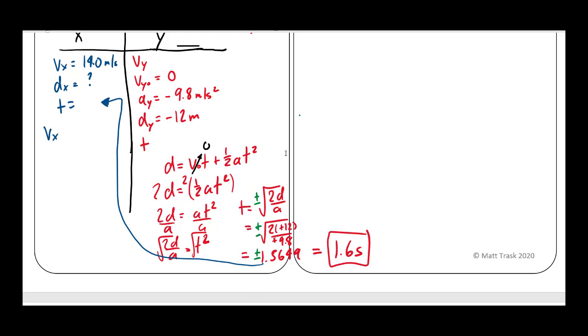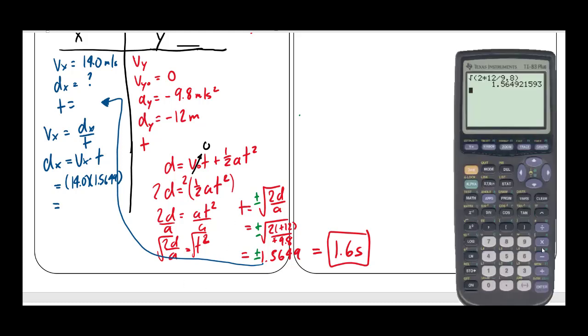I remember that I've got DX equals VX times T. And solving for DX, I get VX times T. When I plug my values, 14.0 times 1.5649, I'm just going to use the number that's still in my calculator. If I'm being totally honest, I just multiply this number times 14. And I get an answer of 21.9089, blah, blah, blah. Let's call it 22. Excellent.